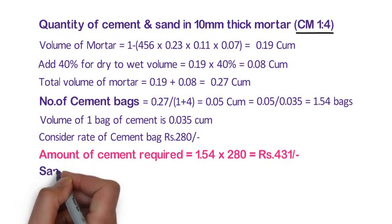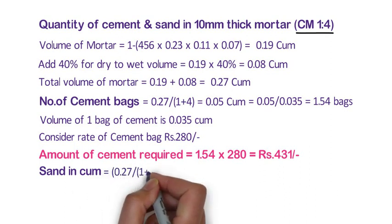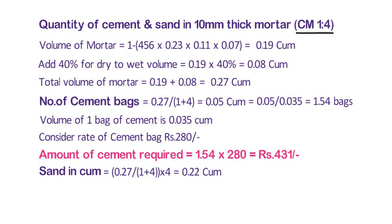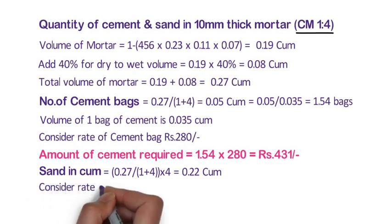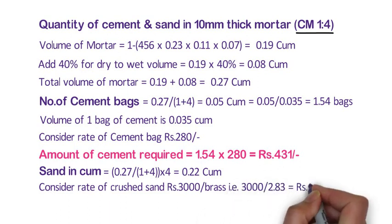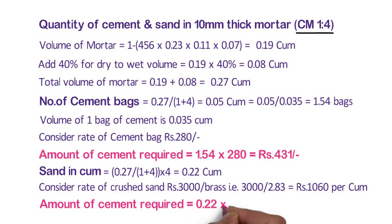Now we will calculate sand in cubic meter. The formula is 0.27 divided by (1+4) into 4 is equal to 0.22 cubic meter. Here I have multiplied it with 4 because sand is 4 times the cement in the proportion. We will consider rate of crushed sand 3000 rupees per brass, means 3000 divided by 2.83 is equal to 1060 rupees per cubic meter. Amount of sand required shall be 0.22 x 1060 is equal to 228 rupees.